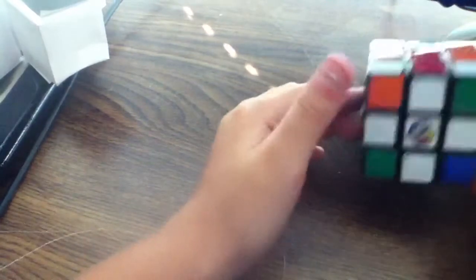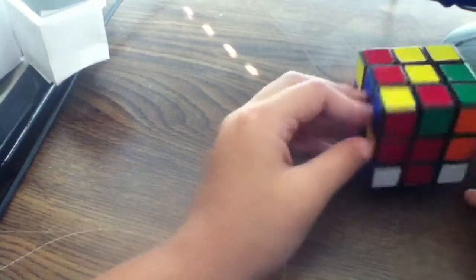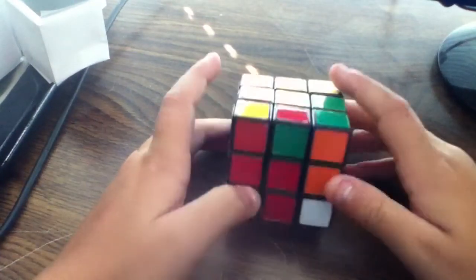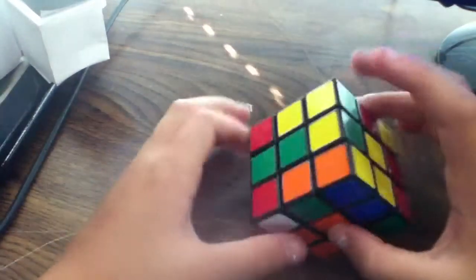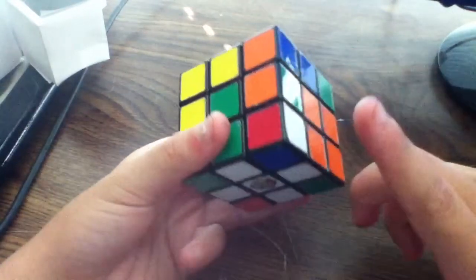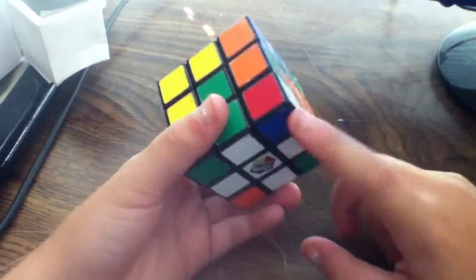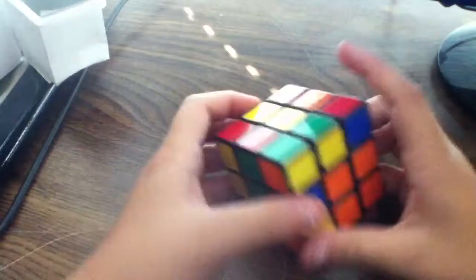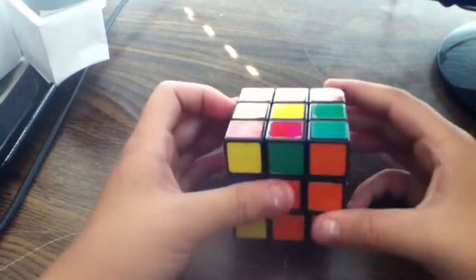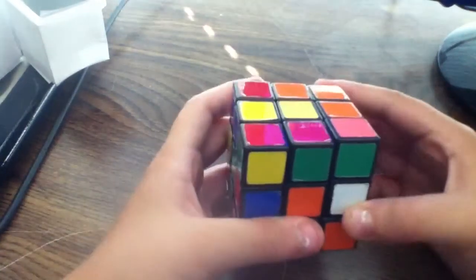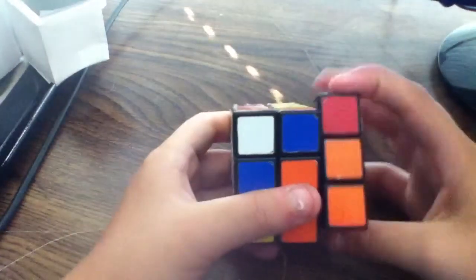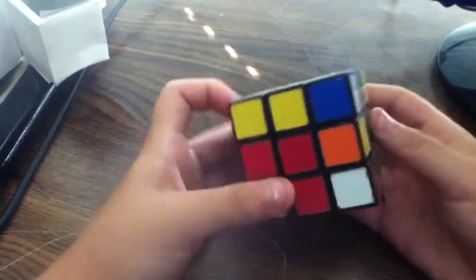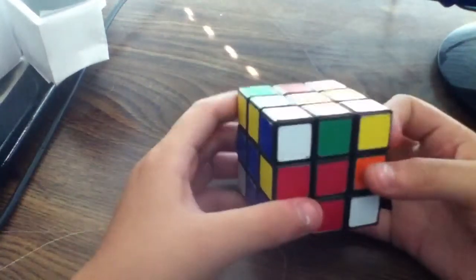Okay, now once you have the white cross like I do, put that on the bottom, just like in the beginner's method. Now you find a corner. This happens to be the white, blue, and red corner. So you want to put it up in the top layer, which is by doing right, right up, right inverted. And that brings that up.